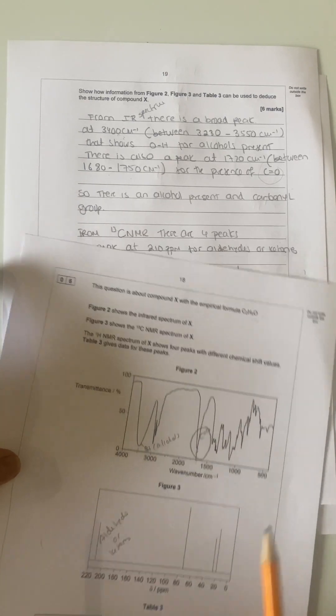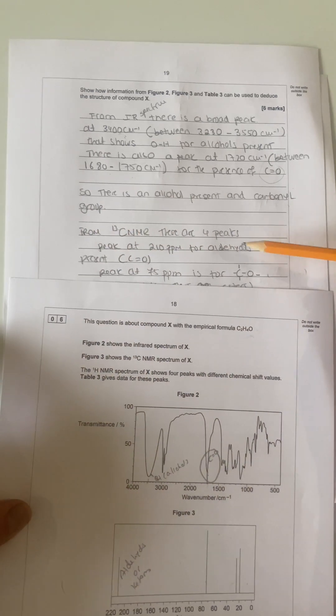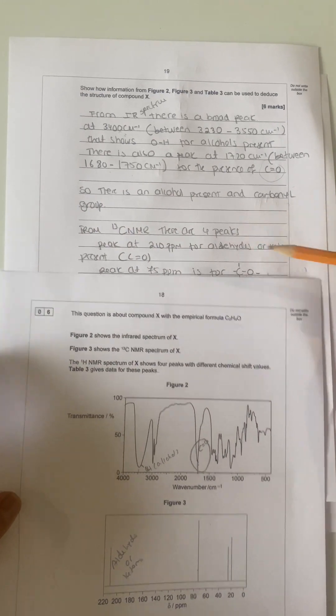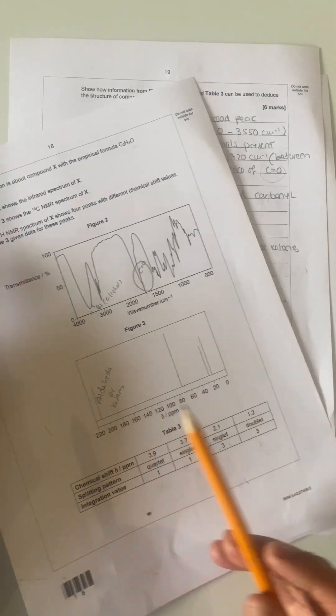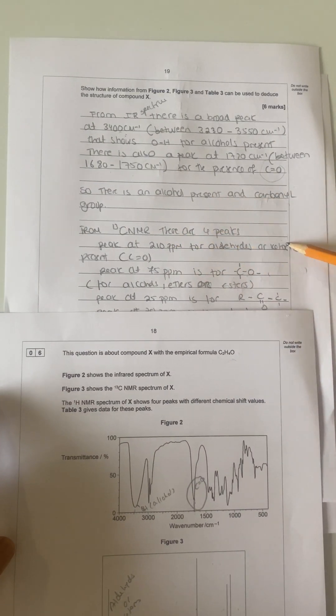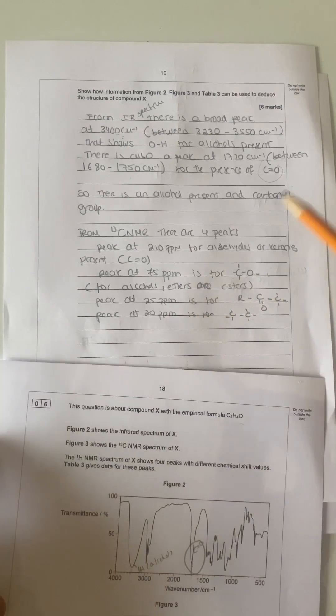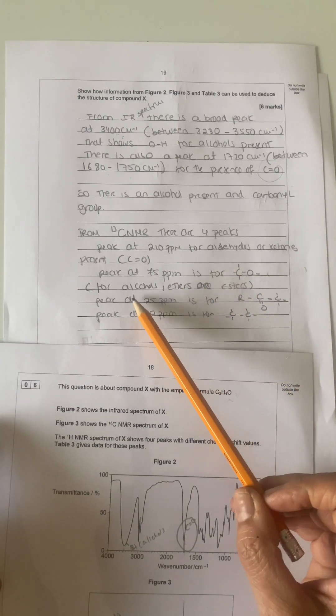So there is an alcohol and a carbonyl group present. For carbon-13 NMR, there are four peaks: 1, 2, 3, 4. The peak at 200 is for aldehydes and ketones, so you're looking at that one there. The peak at 75 is for CO, so it should be the CO for alcohols.